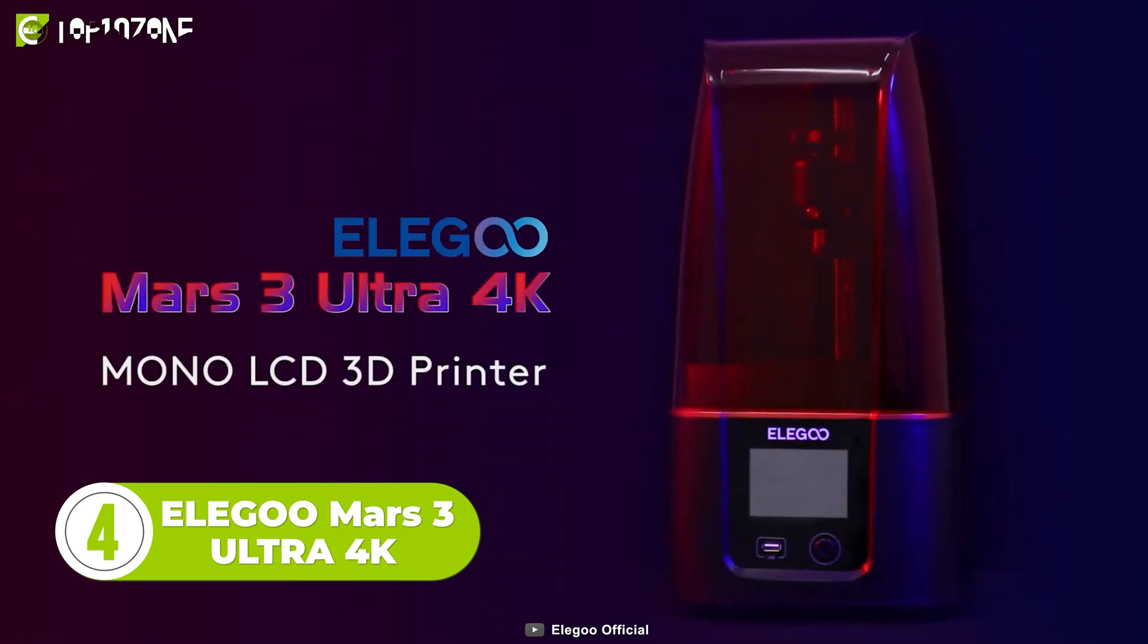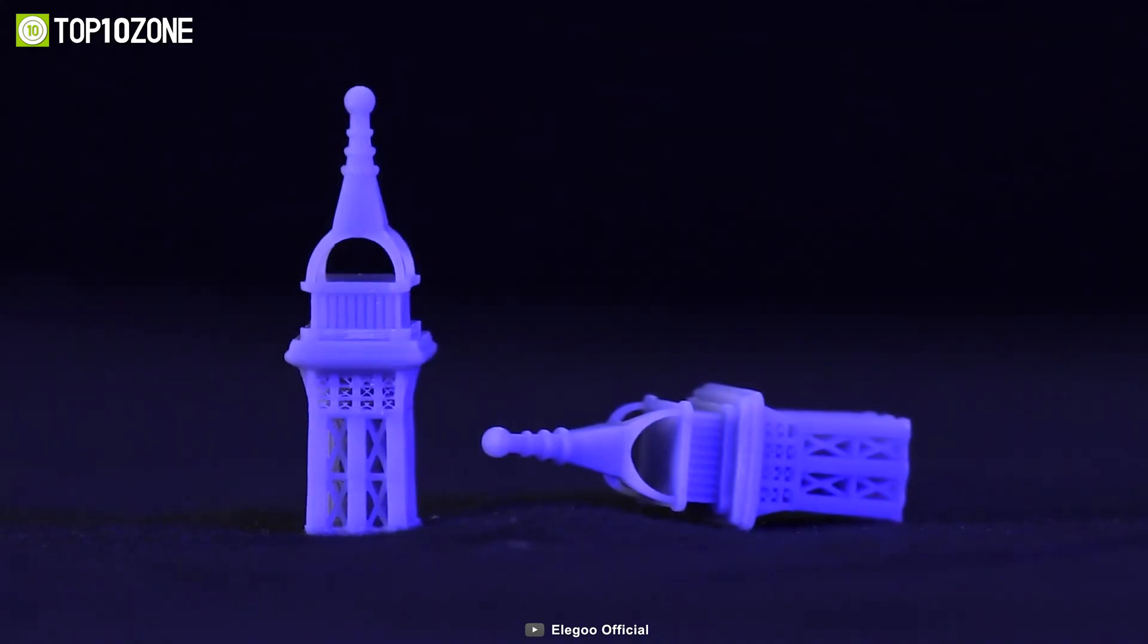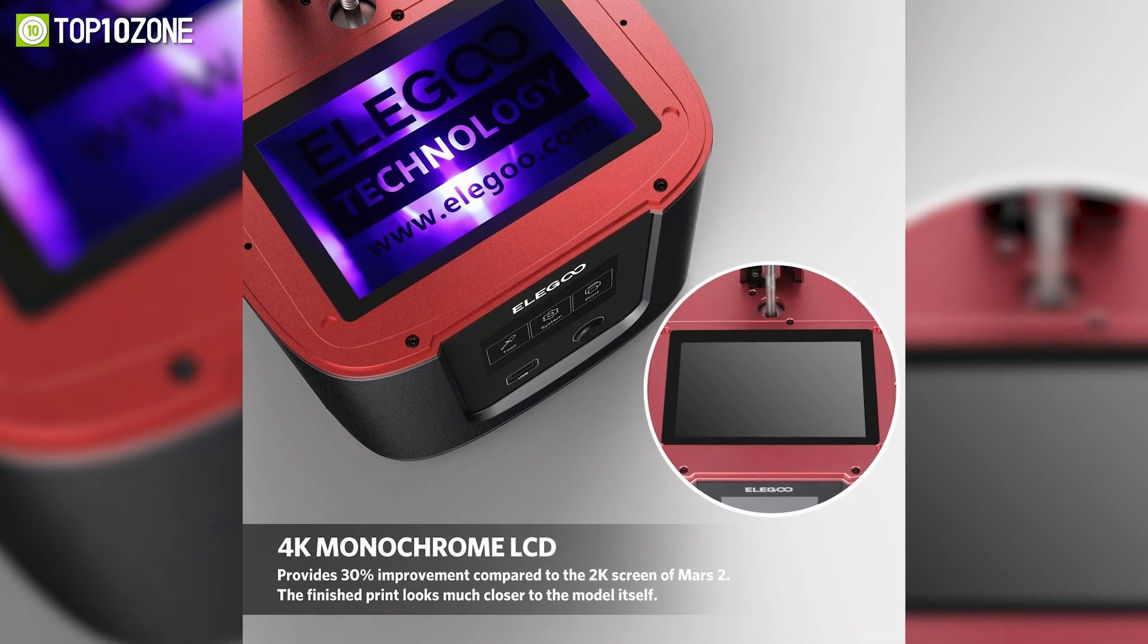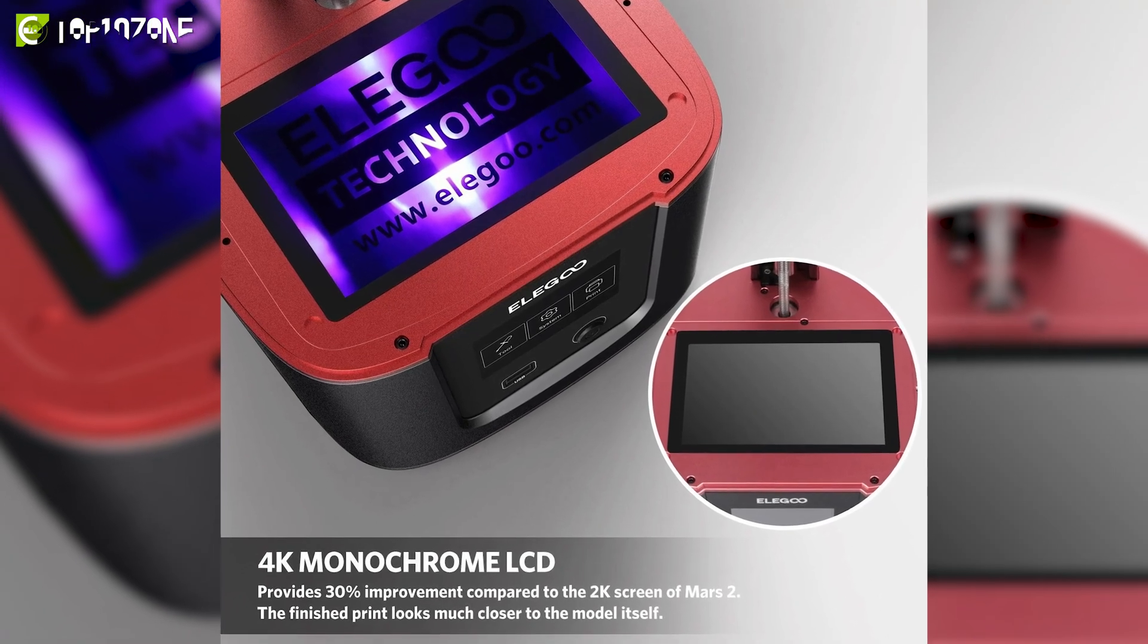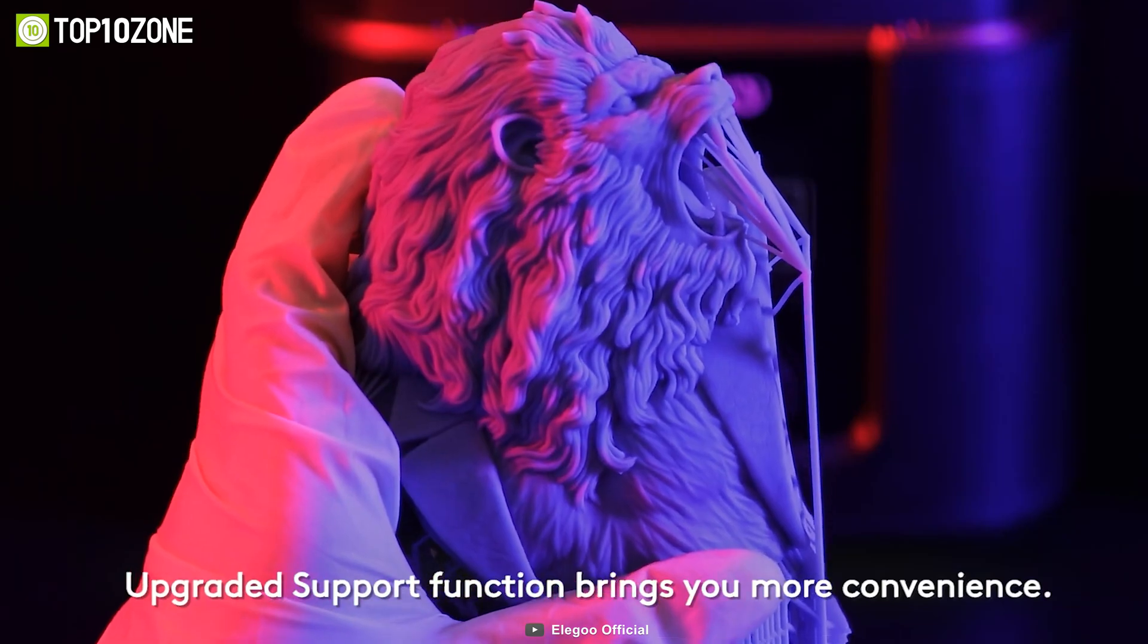The Elegoo Mars 3 Ultra 4K is a remarkable 3D printer with an industrial-grade design and panel integration to make exquisite 3D prints. This printer has superb print accuracy, a 30% improvement compared to the Mars 2, and the finished print looks much closer to the model itself.